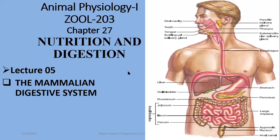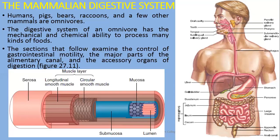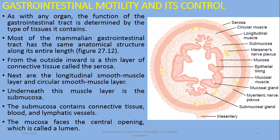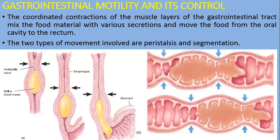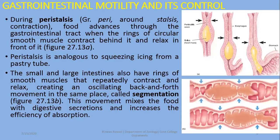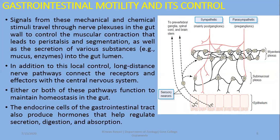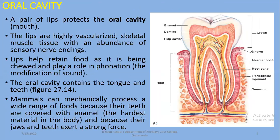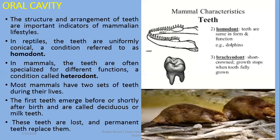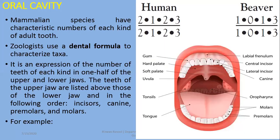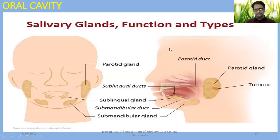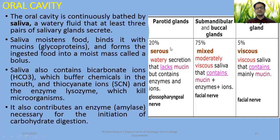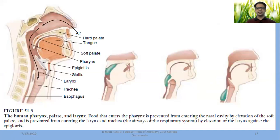In the last lecture we discussed the first part of the mammalian digestive system, which was the oral cavity, its initial steps and overall summary. We covered peristalsis and segmentation, distinctions or valves, plus gastrointestinal motility and its control. We also discussed teeth, their arrangement and types, as well as the dental formula of human beings. In today's lecture, we will discuss functions of the oral cavity with respect to its enzymes, as well as the remaining parts of the digestive tract.